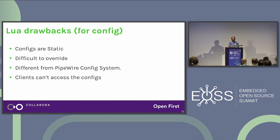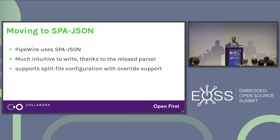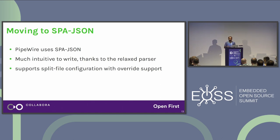Also, clients can't access configs — they don't have a mechanism. So we are moving to SPA JSON, the native configuration system of PipeWire. It is much more intuitive. It supports split-file configuration — your configurations don't need to be in one single file; they can be spread across the filesystem, logically grouped, and you can even override them.